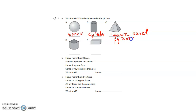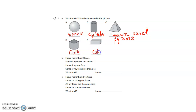A pyramid and a prism are different. A prism has 2 bases of the same shape and its sides are rectangles. A pyramid has one base and a vertex at the top, and its sides are triangles. A cube has 6 faces with all sides of equal length. A cuboid also has 6 faces but not all sides are the same length.